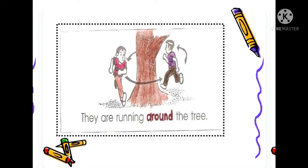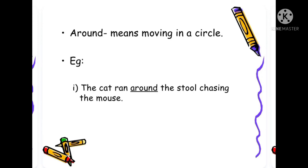Example: they are running around the tree. Around means moving in a circle. Example: the cat ran around the stool chasing the mouse.